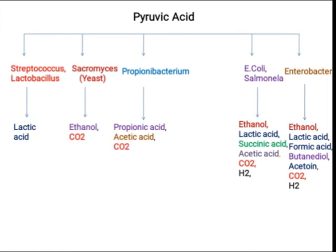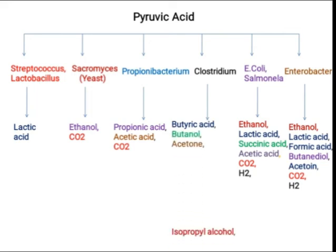If we talk about Clostridium, there are different species such as Clostridium tetani and Clostridium perfringens. All Clostridium species basically produce butylate, butanol, acetone, and isopropyl alcohol as end products. So we have seen fermentation — how it works, which electron donor and electron acceptor are involved, and which bacteria produce different end products in case of fermentation. That's all.